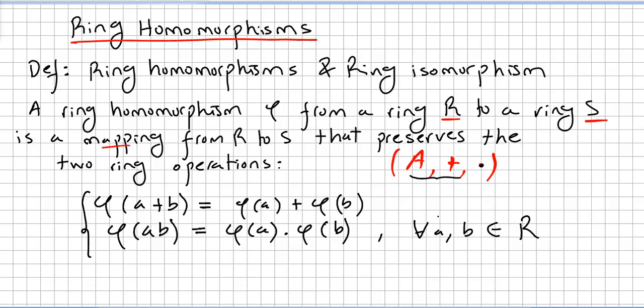This one-to-one ring homomorphism, if the homomorphism is bijective, meaning one-to-one and onto, if we have a ring homomorphism that is one-to-one and onto, we call it an isomorphism.